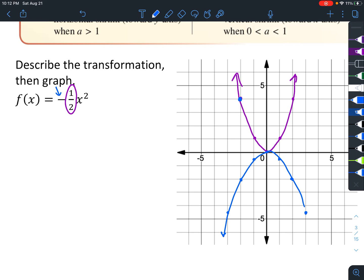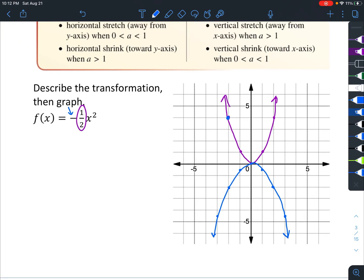This gives us a better picture of what this should be. You can see it looks wider, even though this number is small. That's because it's actually shrinking the graph vertically. Oh, I forgot to list our reflection. So we have reflection in the x-axis. This can help you keep everything straight. It's also a vertical shrink.